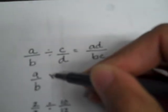When you divide by a number, you're really multiplying by its reciprocal. And if I do that, then it looks like A over B times D over C. So that's why A over B divided by C over D equals A times D all over B times C.